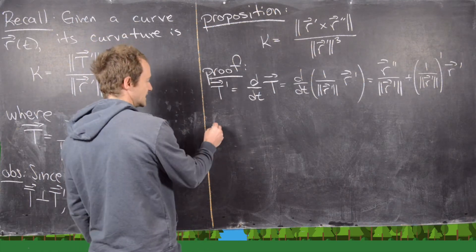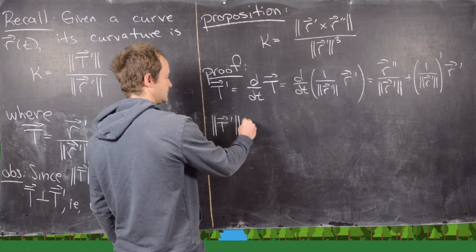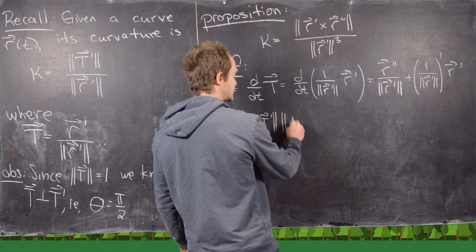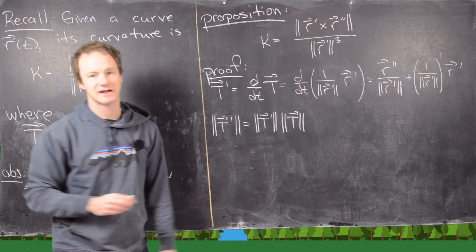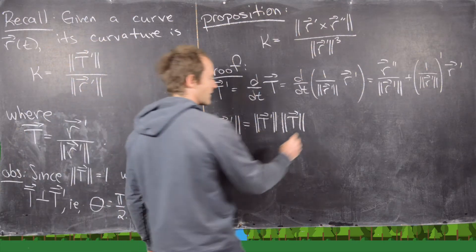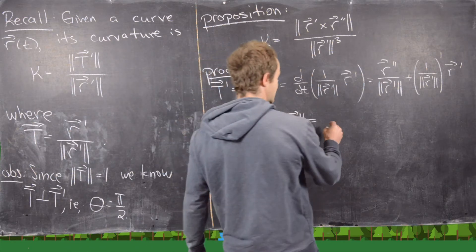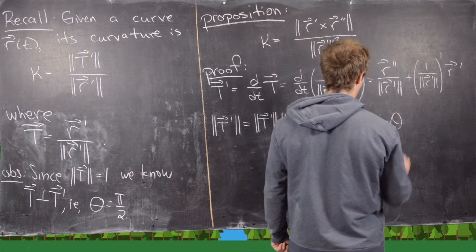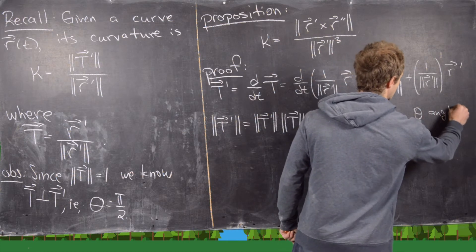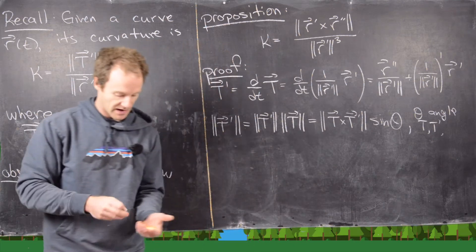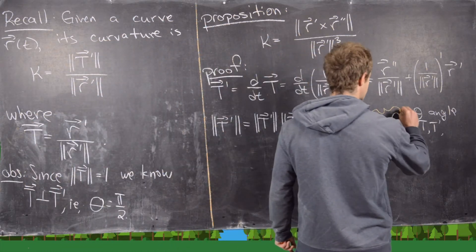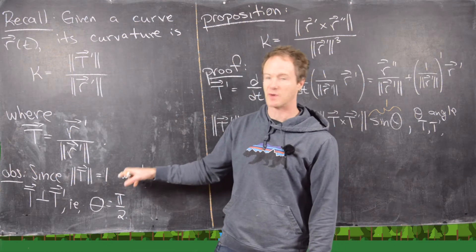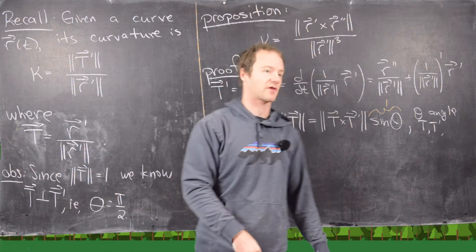Now I want to look at the magnitude of T'. Notice that |T'| equals |T'| times |T|, since the magnitude of T is 1 — I've just multiplied by 1. We can rewrite this as |T × T'| times sine of theta, where theta is the angle between T and T'. Since sine(π/2) = 1, and T and T' are orthogonal, sine theta equals 1.